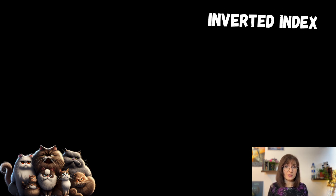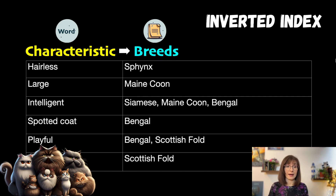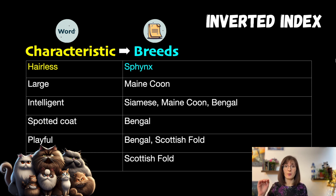For this we will reverse the data and map each keyword — meaning each individual cat characteristic — back to the document, back to the breed. So now when looking for a cat that is both intelligent and playful, you don't need to read information on all the breeds, but you just check two items: intelligent and playful, and do an aggregation on them to find an overlap.